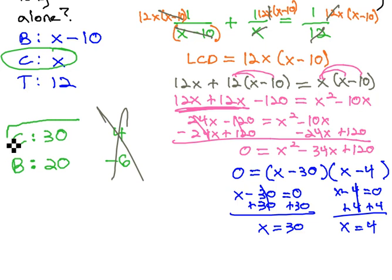So the only possibility that really makes sense in the real world is that Cosmo's going to spend 30 hours on the job, and Brittany's going to spend 20.